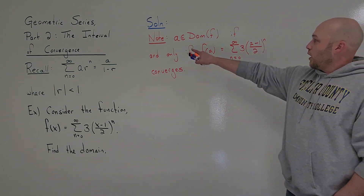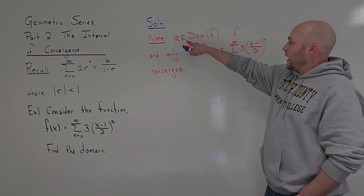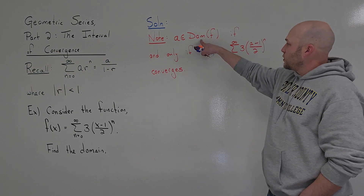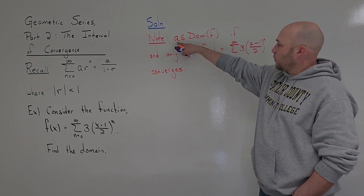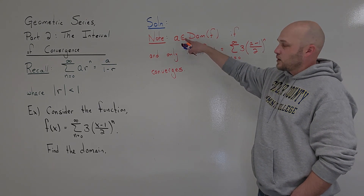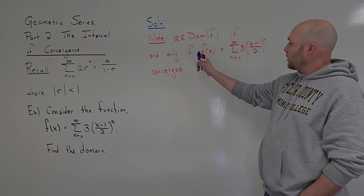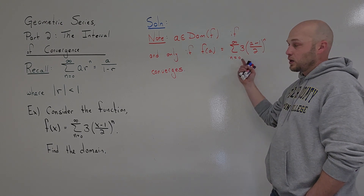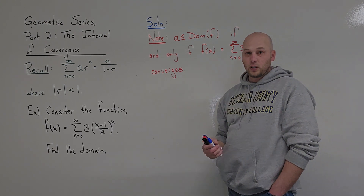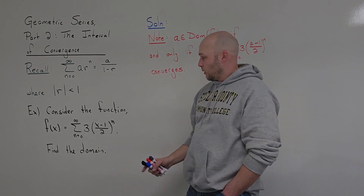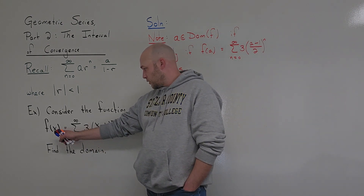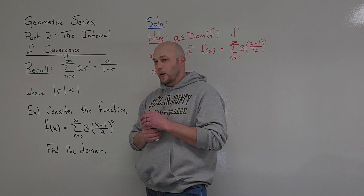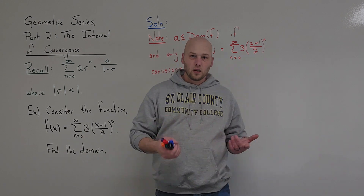First and foremost, recall that a real number a is an element of the domain of the function — a is in the domain of f — if and only if f(a), which is equal to this infinite series, converges. The only values in this function's domain are those for which the corresponding series is convergent.